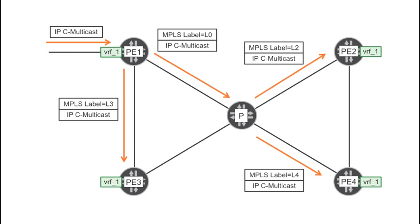As you can see, the replication is performed by the network. Then P does an additional replication and delivers one copy of the packet to PE2 and PE4 respectively. It's definitely possible to change the IGP metrics or add traffic engineering constraints so as to make all the sub-LSPs go through P, but this falls outside the scope of this introduction.